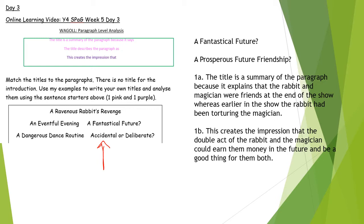Use my examples to write your own titles. You can see that I have chosen to look at 'A Fantastical Future' and I've rewritten my own version as 'A Prosperous Future Friendship.' I've had to look back at the paragraph to find out what it's about and find a short snappy way of explaining that. I want you to try and think of a different one. Don't just change the adjective. See if you can re-explain it.